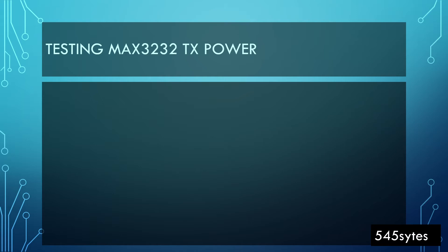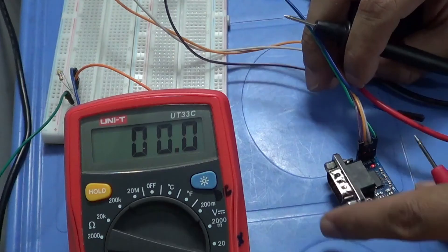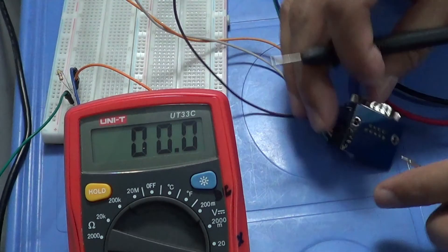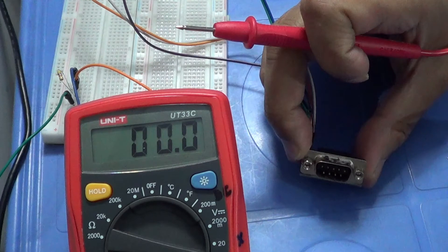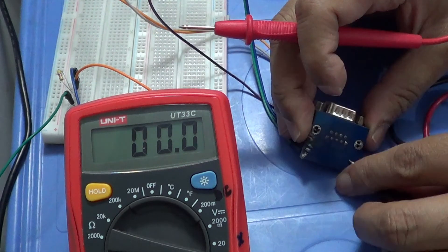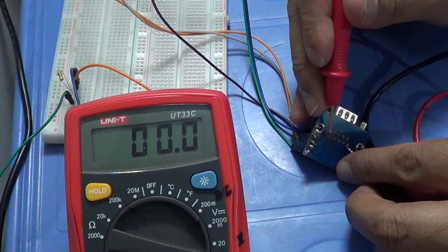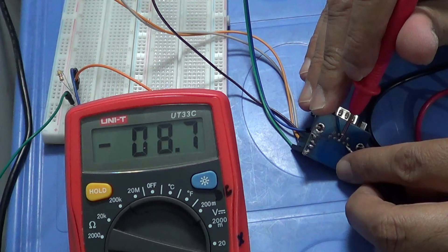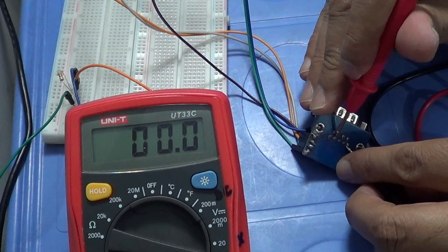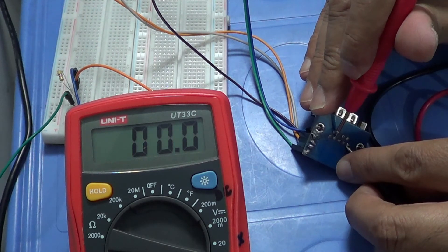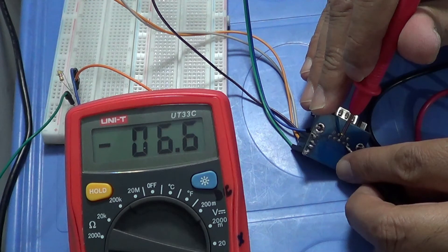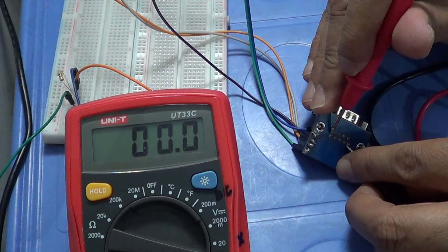Let me show you what is the output from the MAX3232 TX wire. Let's check out MAX3232 outputs. If we connect ground with ground and check out pin number 3, it is at minus 8. And pin number 2 is at 0. So pin 3 is at minus 8 and pin 2 is at 0, meaning pin 3 is the transmitting pin.